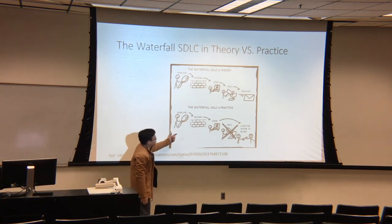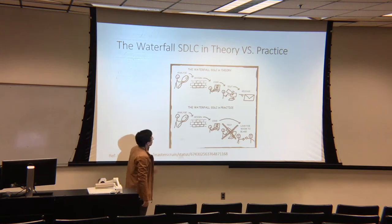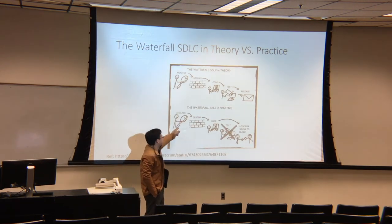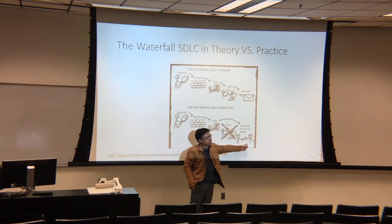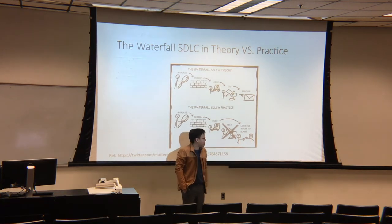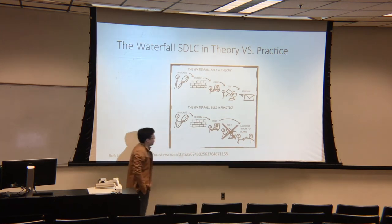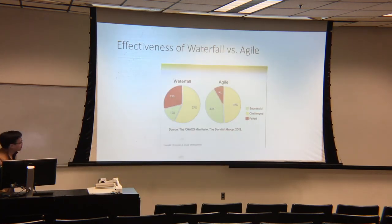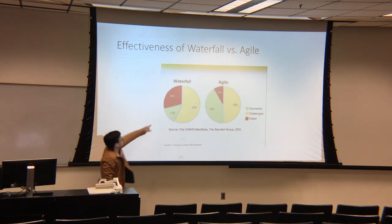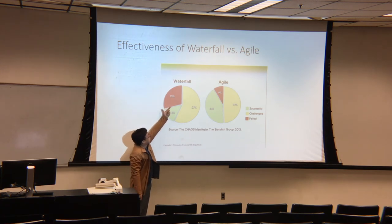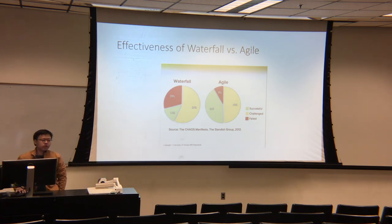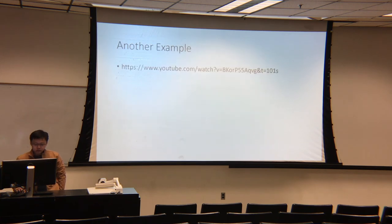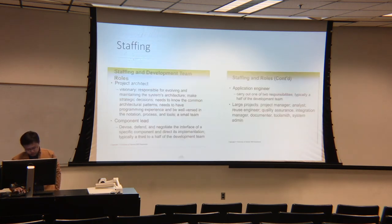Waterfall design has a problem: the ideal is design, code, test, and release — but in reality, problems are discovered late, and the testing team and development team end up pointing fingers at each other. Looking at industry effectiveness, waterfall still has a large share, but agile design is now a clear trend in software development. This is the final example we've covered today.